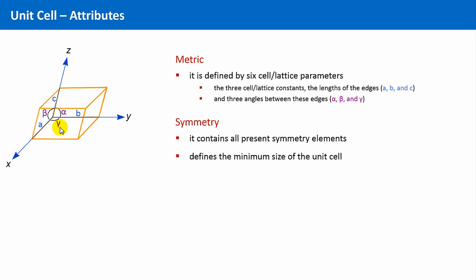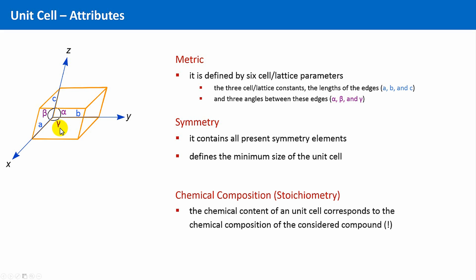From the definition of the unit cell, one further attribute follows, namely regarding its chemical composition, or the stoichiometry, as the chemist says.